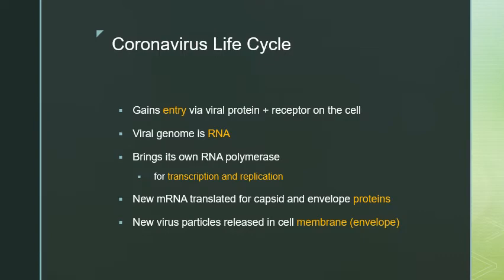Looking specifically at the coronavirus life cycle — it's just like the picture I showed you. It gains entry via a viral protein and a receptor specific to the cell. The viral genome is RNA. Since living organisms don't have a genome made of RNA, the coronavirus has to bring its own enzyme called an RNA polymerase, which is capable of making more RNA from an RNA template. All living organisms can take DNA and make RNA from that, but they don't have an enzyme that makes RNA from RNA. So coronavirus has to bring its own RNA polymerase for transcription and replication. The new mRNA is translated for the capsid and envelope proteins, and then the new virus particle is released in that envelope.